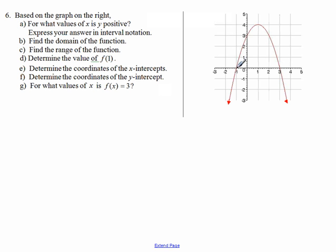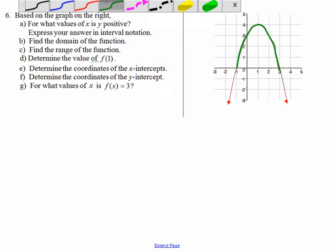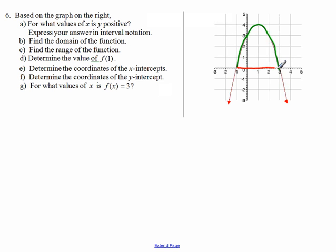We are talking about these points on the graph. The question now becomes, what are the x values of these points? The x values are all the x values here. They are in between x equals negative 1 and x equals 3. We are excluding x equals negative 1 because the y value right there is 0, and we are excluding 3 because the y value there is also 0.